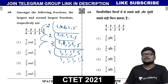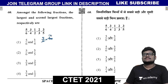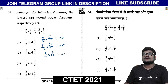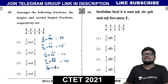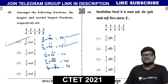Using LCM = 60 to convert each fraction: 5/6 → 50/60, 3/4 → 45/60, 1/2 → 30/60, 2/3 → 40/60, 3/5 → 36/60. The largest is 50 (which is 5/6) and the second largest is 45 (which is 3/4). So the largest fraction is 5/6 and the second largest is 3/4.